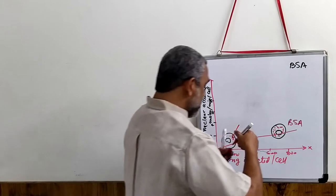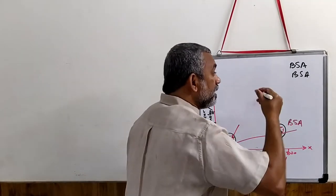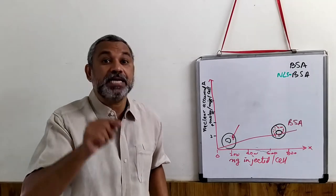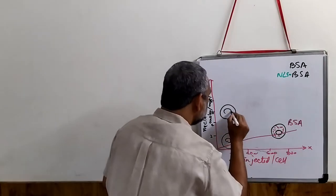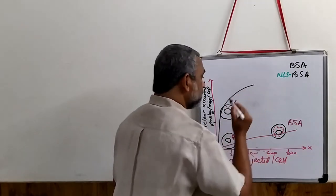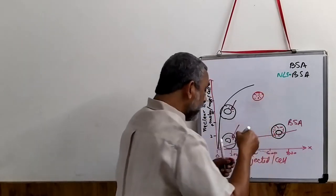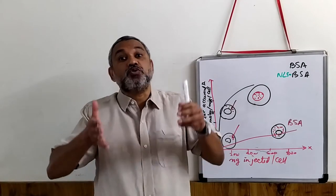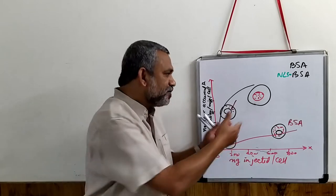Now what they did is, along with this BSA, a sequence — an NLS — is added to the BSA. So NLS is added to the BSA. What should happen with the NLS? That should direct the BSA towards the nucleus — that is the hypothesis. So the cell is shown again with the nucleus, and this is injected again. What happened is that the entire nucleus got filled with the NLS-BSA, and there was nothing in the cytoplasm. So this is the kind of experiment to show that there is a sequence required for directing a protein to a particular location, especially in this case into the nucleus.